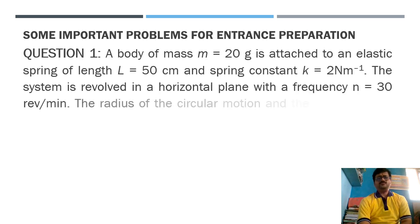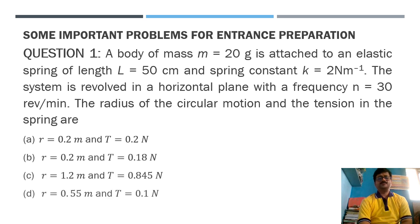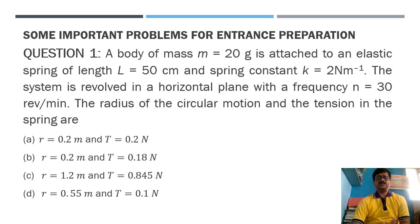The first problem is: a body of mass m equal to 20 grams is attached to an elastic spring of length l equal to 50 centimeters and spring constant k equal to 2 newton per meter. The system is rotated in a horizontal plane with a frequency of 30 revolutions per minute. Find the radius of circular motion and the tension in the spring. I will be applying laws of motion — a very simple approach.